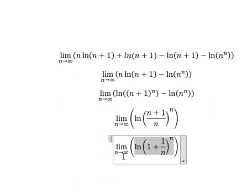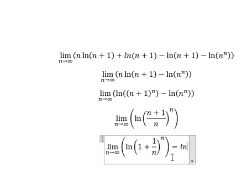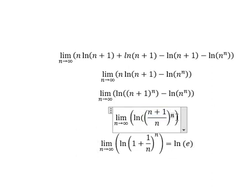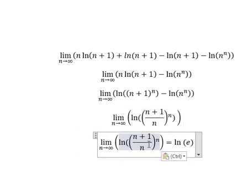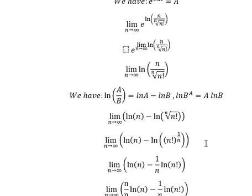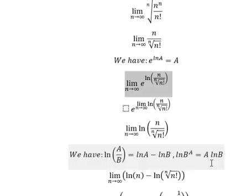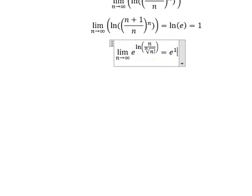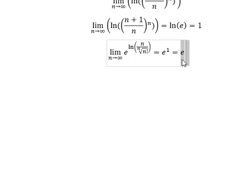When n approaches positive infinity, this expression here approaches e. So that is about ln of e. The remaining ln terms equal 1, so we go back and get e as the result — and this is the final answer.